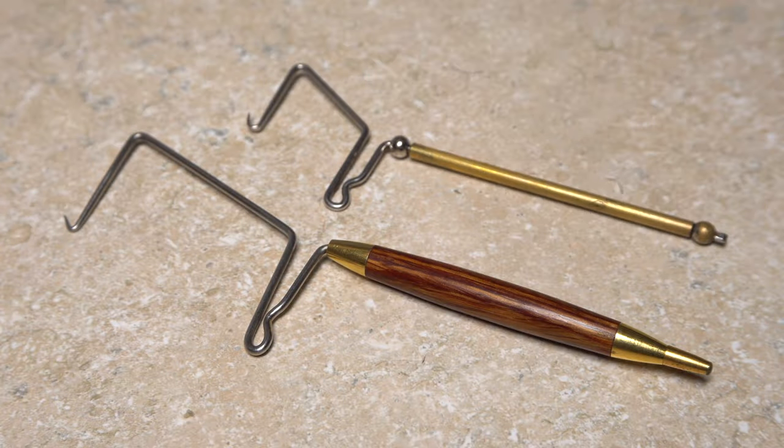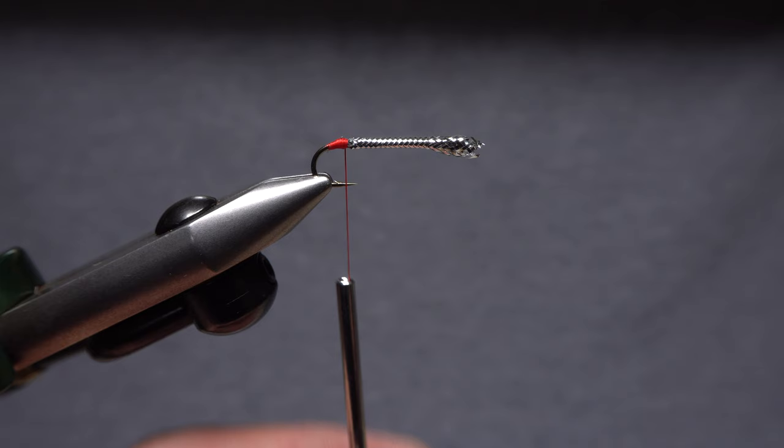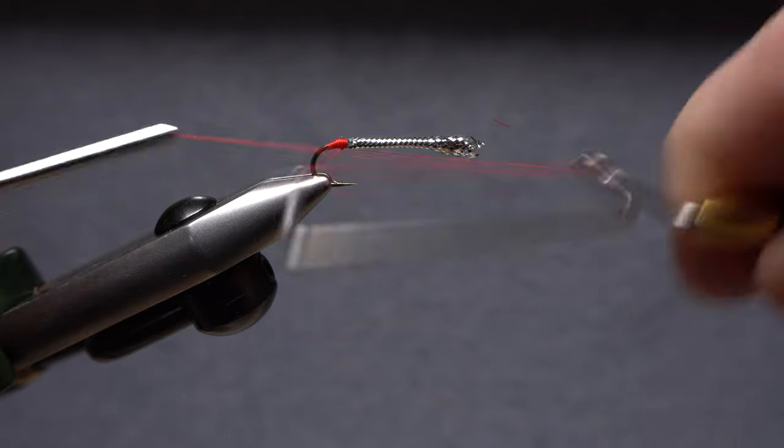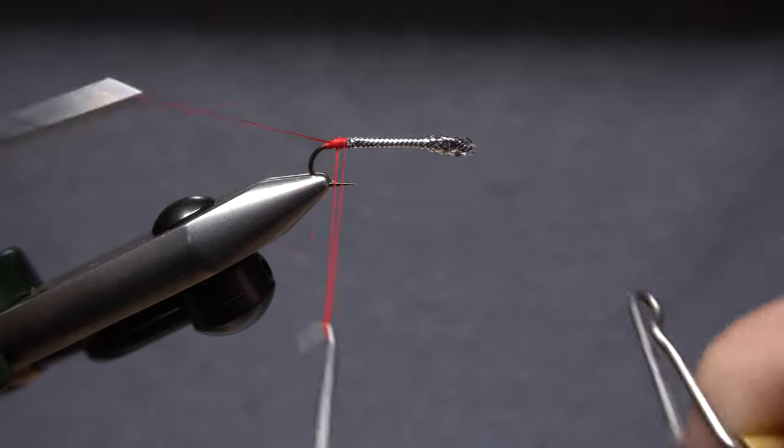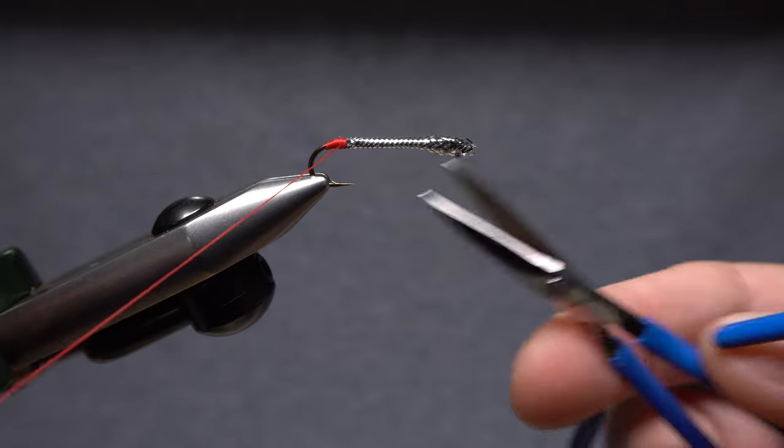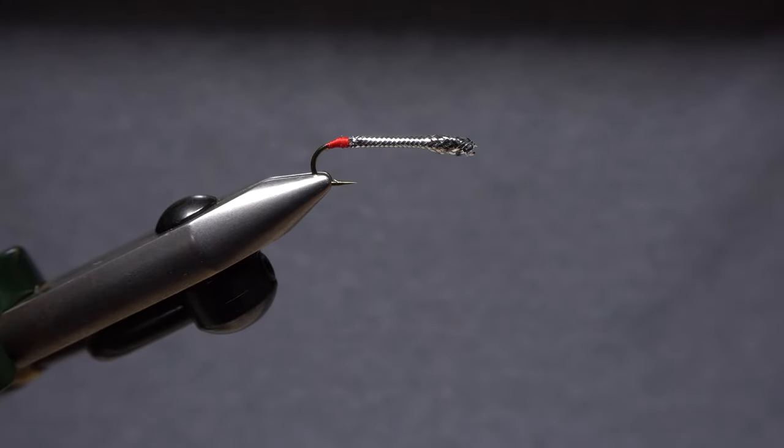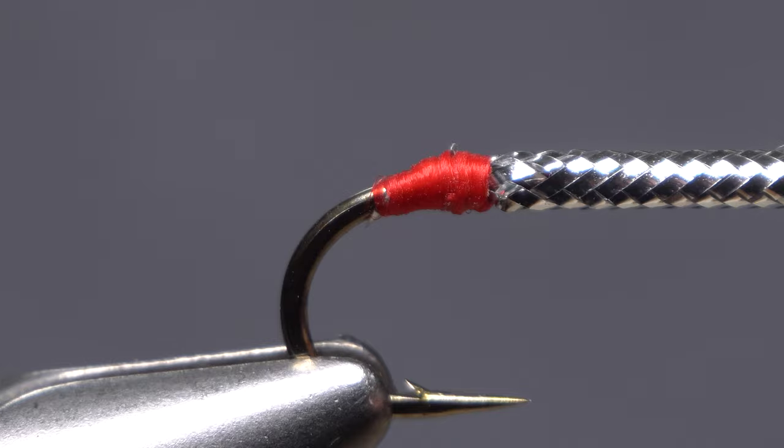A large whip finisher makes whip finishing far back on the hook like this much easier, but isn't required. After a 5 or 6 turn back to front whip finish, seat the knot well and snip your tying thread free. The final wraps should be fairly smooth and the tube anchored securely.